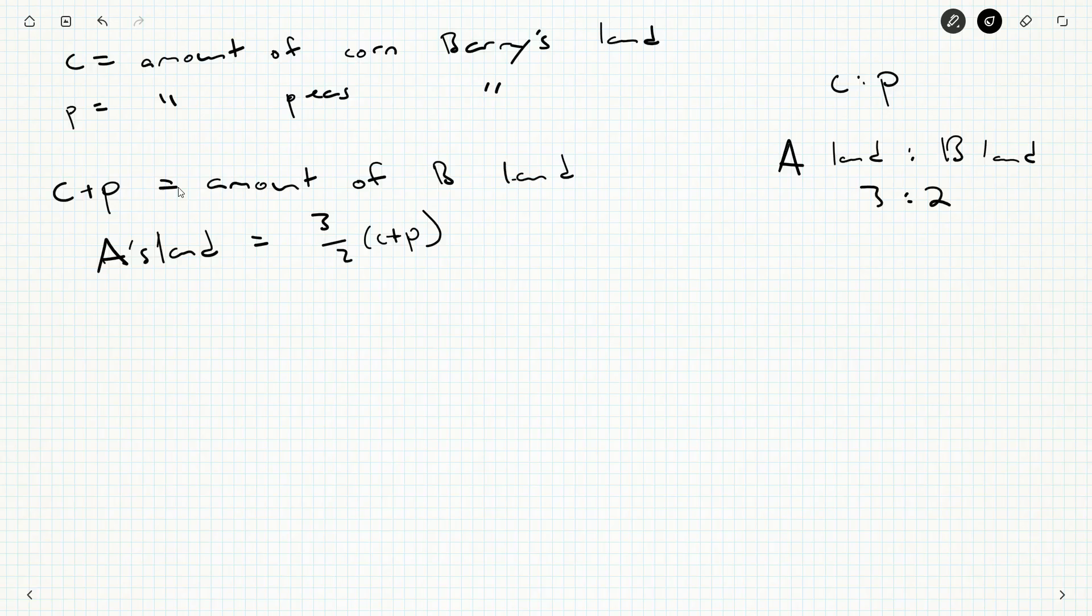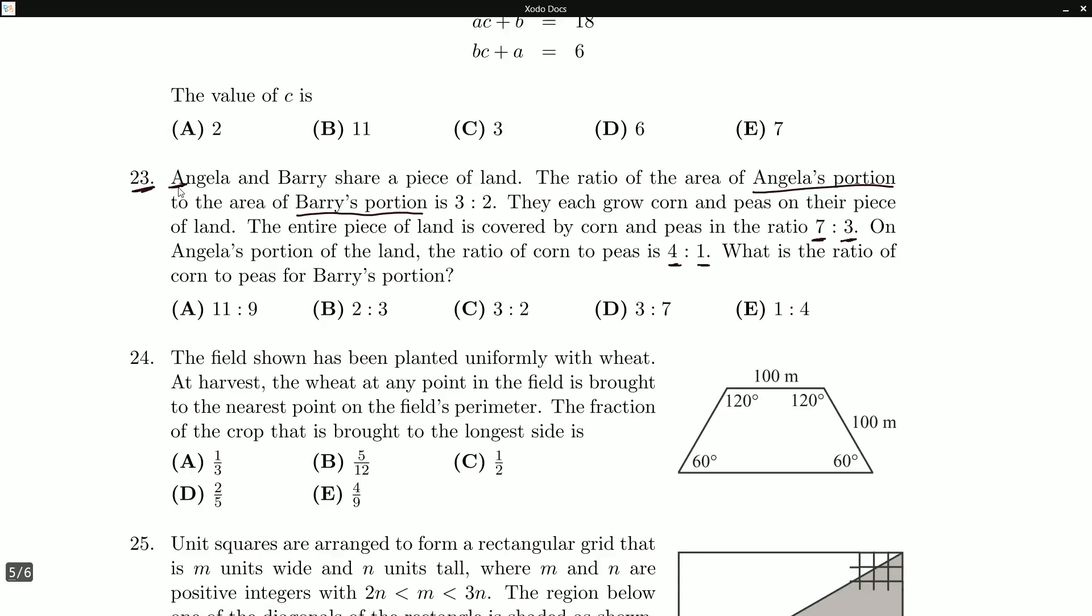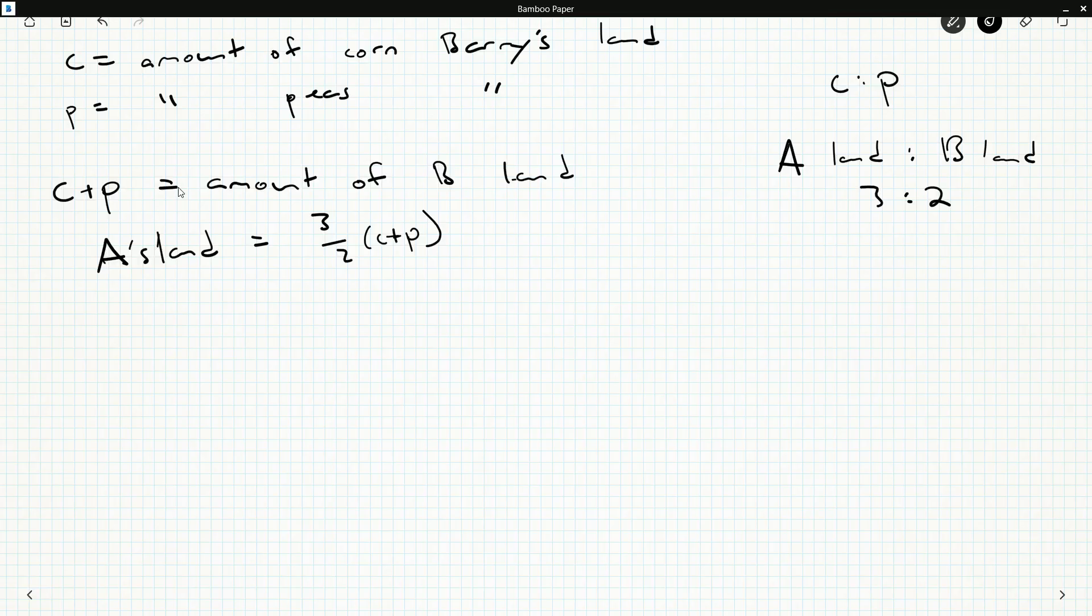What else do we know? Well, we know the total ratios of corn to peas. And we know the ratio on Angela's land of corn to peas is four to one. So we might say, let A be the amount of corn on Angela's land.